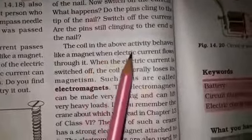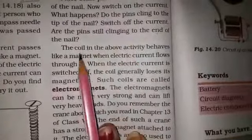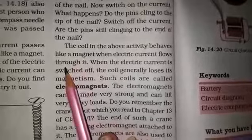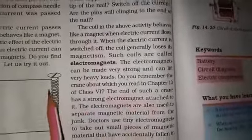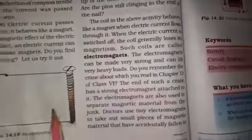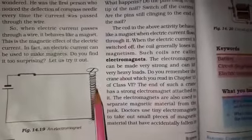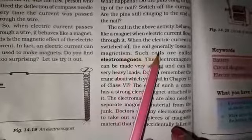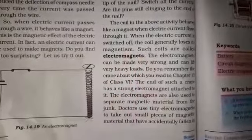The coil in the above activity behaves like a magnet when the electric current flows through it. This coil behaves like a magnet when the electric current flows through it. When the electric current is switched off, then the coil loses its magnetism.